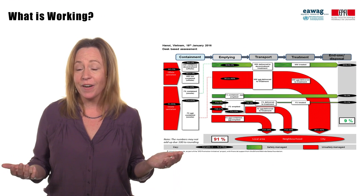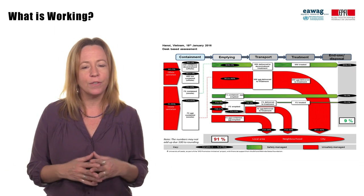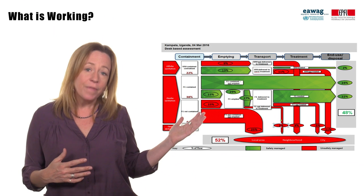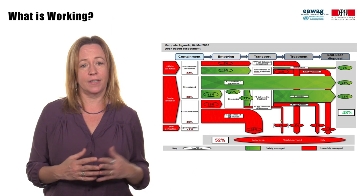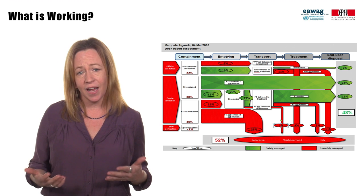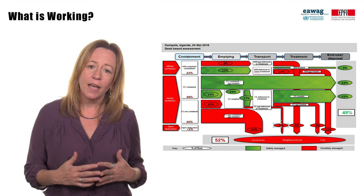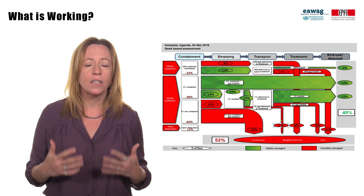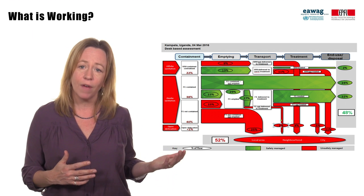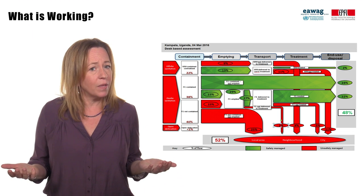However, in Hanoi there is nowhere legal to discharge. How will that change with the new Decree 80? In contrast, in Kampala there is fecal sludge treatment, but access to toilets is frequently crowded and unhygienic. Treatment plants are at or over capacity, and fecal sludge in informal settlements is frequently directly discharged to the environment. How will their sanitation master plan change that?